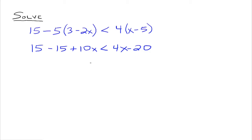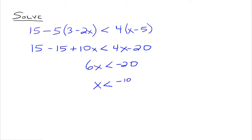We subtract 4x from both sides. That would give us 6x is less than negative 20. Then divide both sides by 6. Since it's a positive number, we don't switch the inequality symbol around, so it stays less than, and we get negative 20 divided by 6, which is negative 10 thirds.